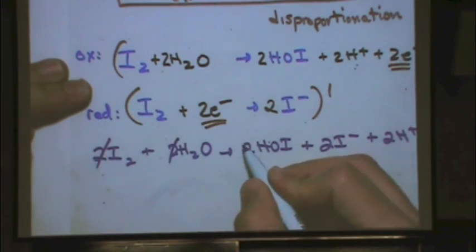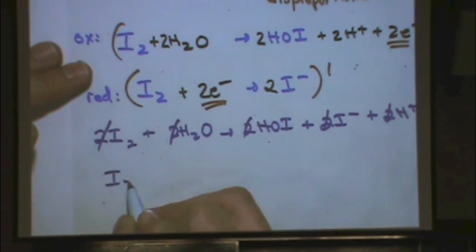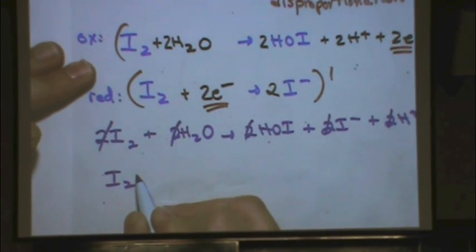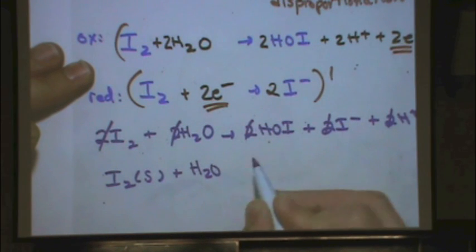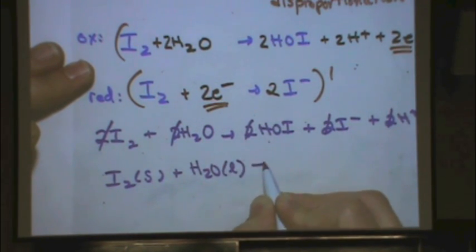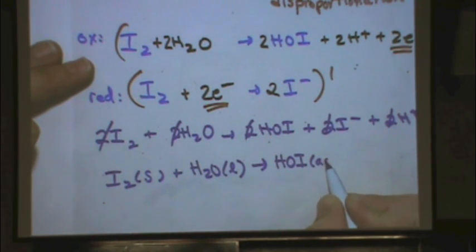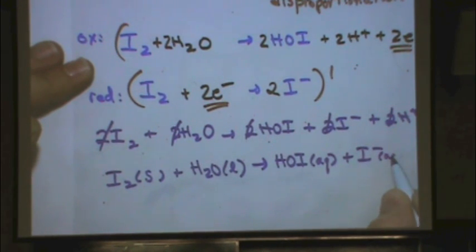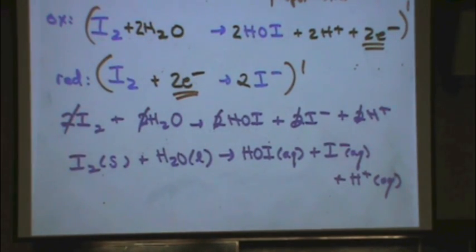Notice all the 2s cancel, so divide through by 2. I₂ is a solid — that's from the standard conditions chart. Water is a liquid. Hypoiodous acid (HOI) is aqueous. I⁻ has a charge, so it's aqueous. H⁺ has a charge, so it's aqueous. That's the acidic conditions answer.